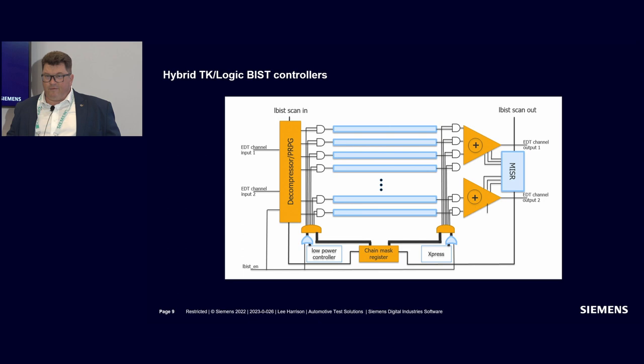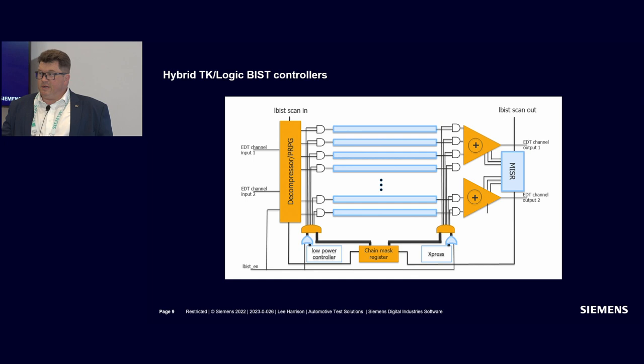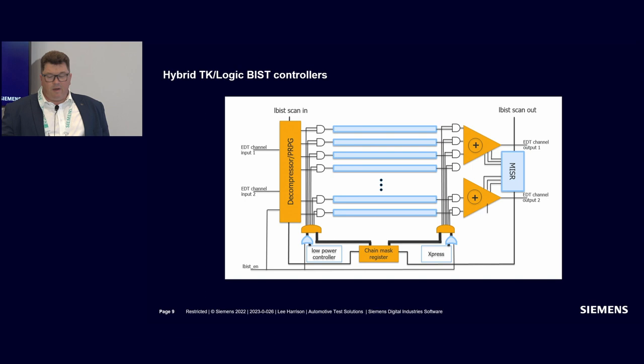You have a single controller IP — a hybrid TK-LBIST controller — that is dynamically switchable during configuration. When running manufacturing tests, you configure the IP into ATPG mode. When running in-system, you run in Logic BIST mode. This really gives you the best of both technologies with a minimal overhead.